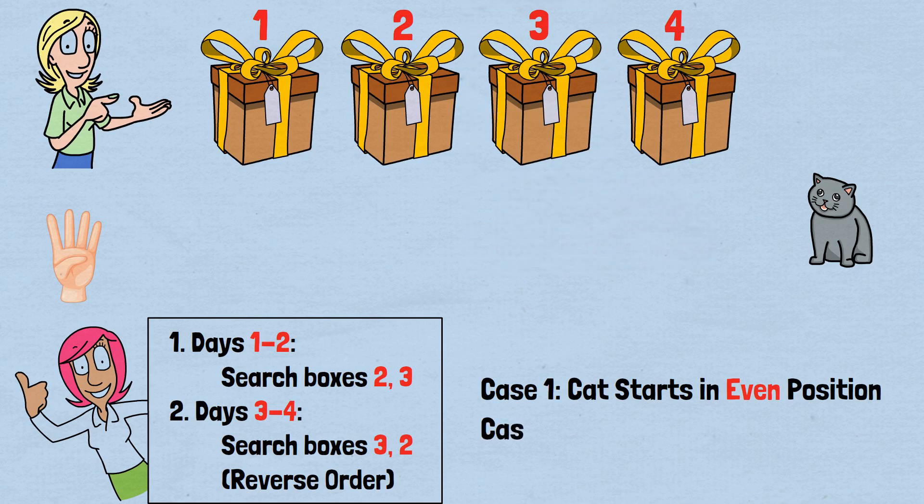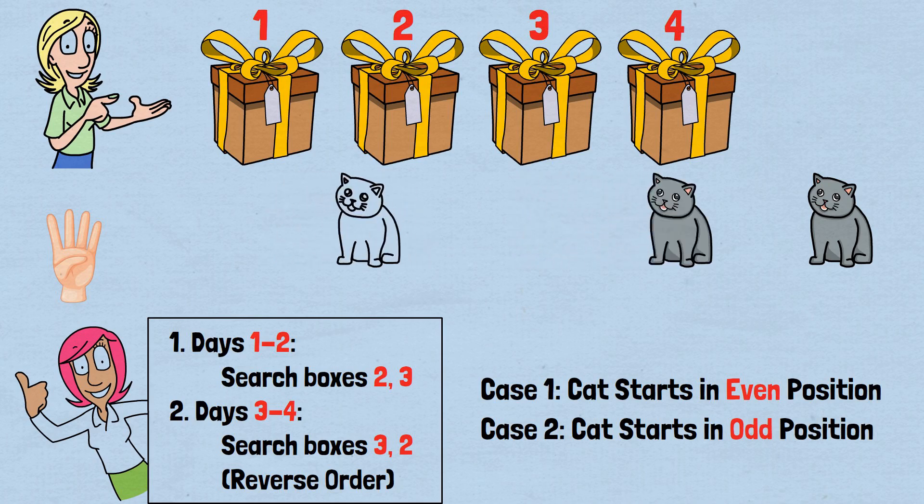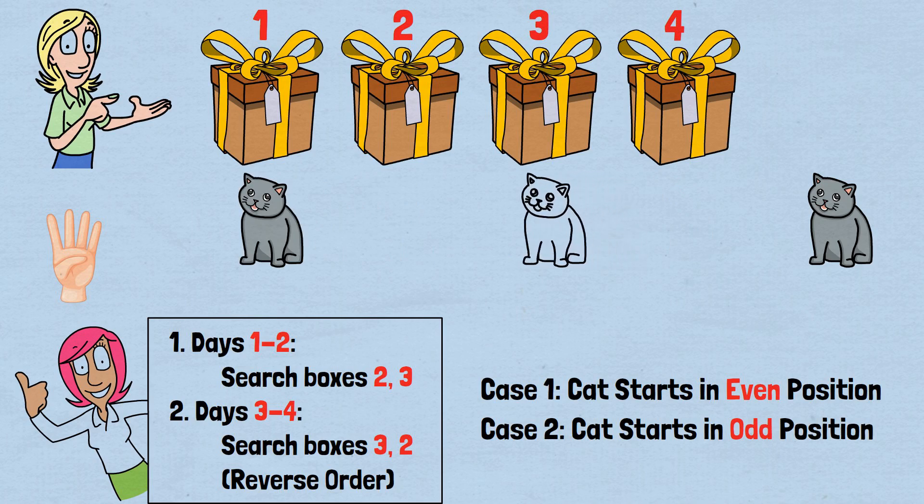Case 2: Cat starts in odd position, box 1 or 3. After our first search, days 1 to 2, the cat starting in an odd position will still be in an odd position on day 3. This is the key difference from the 5 box case.